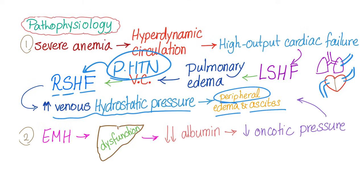There is another mechanism. During hemolysis such as in RH incompatibility, there is extramedullary hematopoiesis to help the overworked bone marrow. Now the liver is working like crazy, leading to hepatomegaly and possibly hepatic dysfunction. Normally the liver secretes albumin, but a dysfunctional liver secretes less albumin. Less albumin means less oncotic pressure, and again you have peripheral edema. This is the pathophysiology of hydrops fetalis.